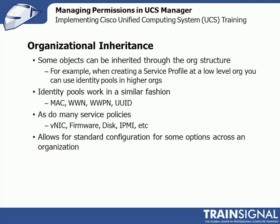Some objects can be inherited through the organizational structure. For example, when you create a service profile at a lower level, you can use identity pools in a higher org. So if I have root, production, and division A, and I'm creating a new service profile in division A, but all my MAC, WWPN, and UIDs are up at root, I can go up the tree and use those. It creates an atmosphere for standard configuration — I can set things at a top level and have people at a lower organizational level use them, ensuring everything is unique and we're not trampling on each other for things like MAC addresses. This also applies to other service policies like VNIC, firmware, disk, IPMI, and VHBA.